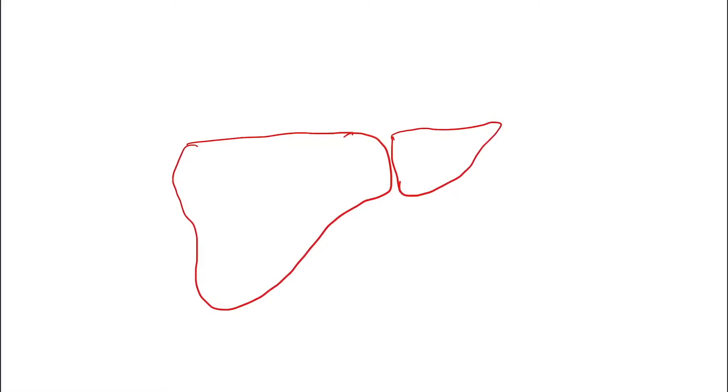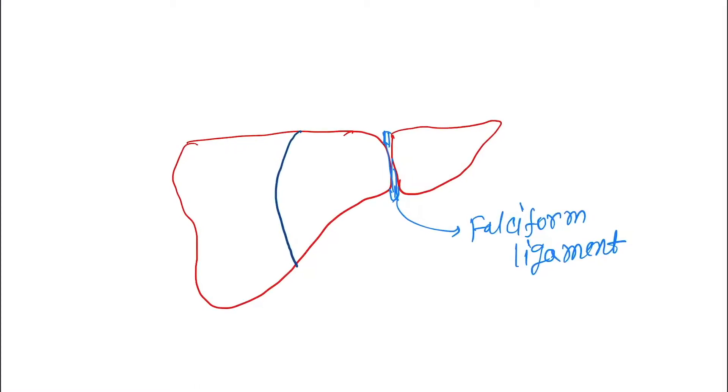Okay, then this is the falciform ligament. And there is the Cantlie's line—I will describe it later. This is Cantlie's line which divides the liver into right and left lobe. This is the right lobe.